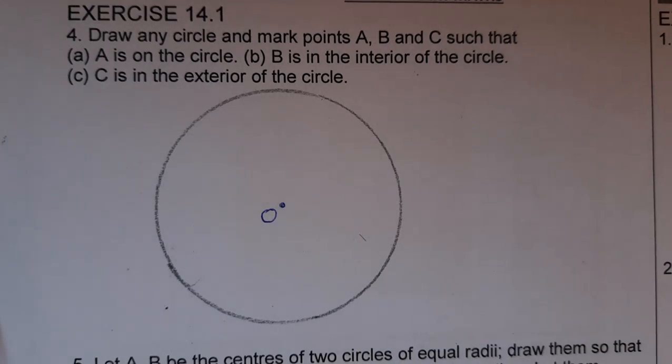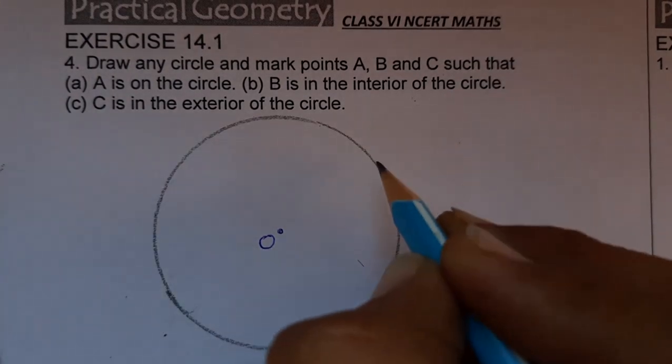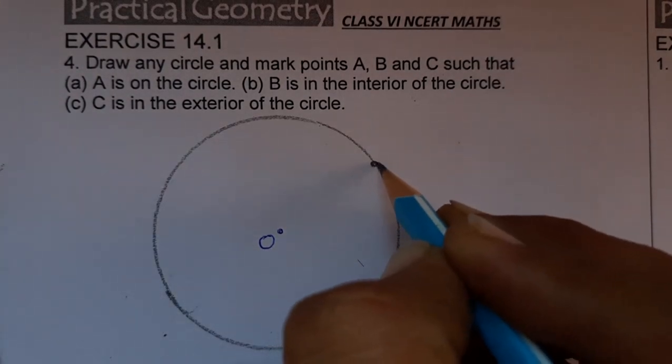Now let's mark A, B, C - three points we have to mark such that A is on the circle. So this is A on the circle.